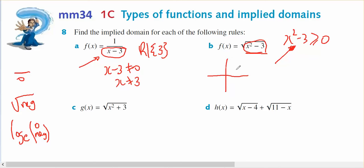So it's a parabola, it goes through here at negative 3, therefore that's root 3, that's negative root 3. Where is it bigger than zero? It's bigger than zero up here, which means bigger than root 3,